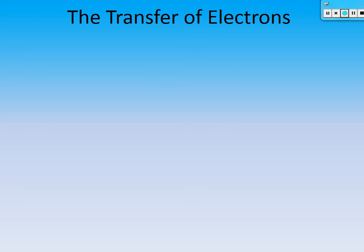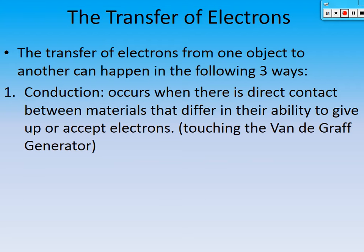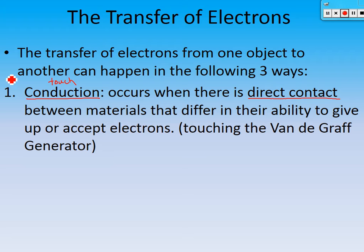There are three ways electrons can go from one object to another. The first is conduction — it occurs when there is direct contact made between materials that differ in their ability to accept or give up electrons. The key thing to remember: conduction requires direct physical contact. Examples include touching the Van de Graaff generator, or shocking somebody — the electrons transfer from one person to another.